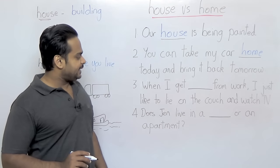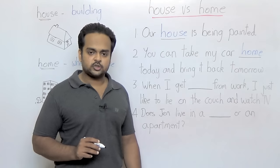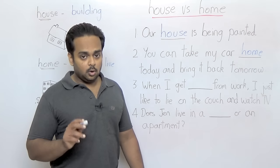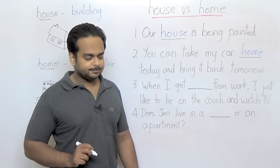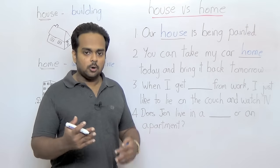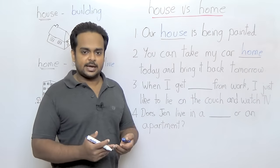Alright, sentence number three is: when I get blank from work, I just like to lie on the couch and watch TV. House or home? Once again we're looking for the word home. Why? Because when I talk about getting home from work, my home could be anything. It could be that I live in an apartment or maybe I go back to a trailer where I live or I go back to my boat.